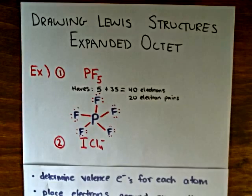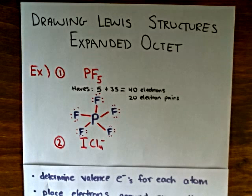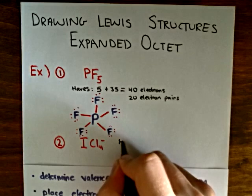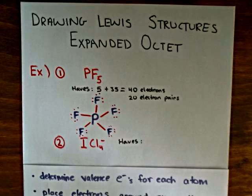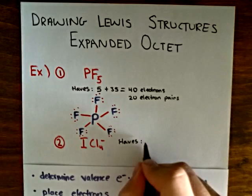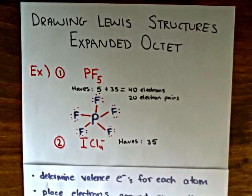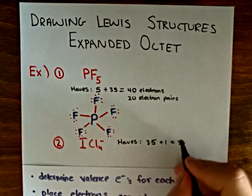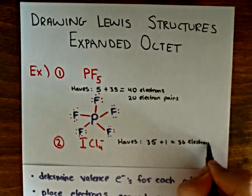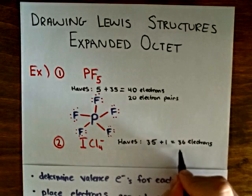Now let's look at this anion. Again, we start off by determining the number of electrons that each atom in this species has in its ground state valence. Iodine and chlorine all have seven valence electrons, and there are five of those, giving 35 electrons. Plus, we have to take into account this additional electron, which gives us a total of 36 electrons, or 18 electron pairs.